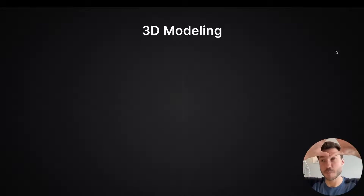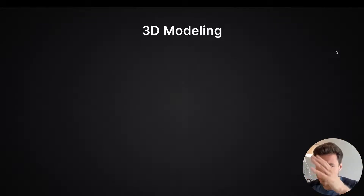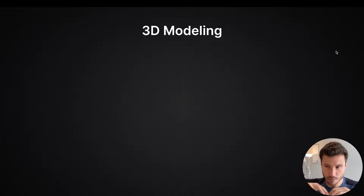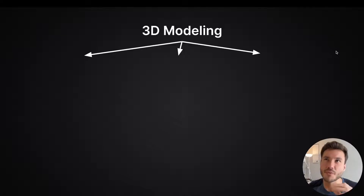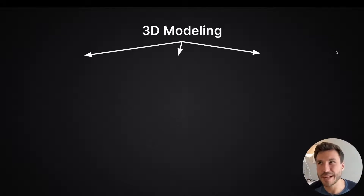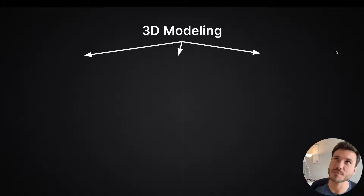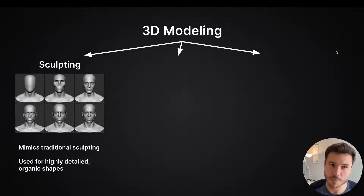We have the big section of 3D modeling — 3D animation, 3D rendering, and those different things. You can split 3D modeling into three main categories. If we really break it down to three, the first one is sculpting.